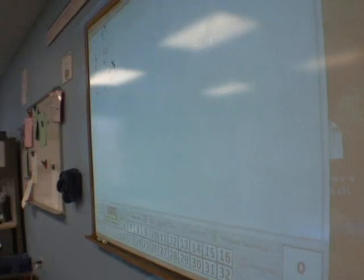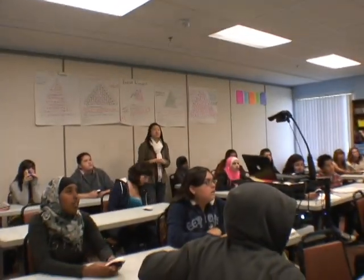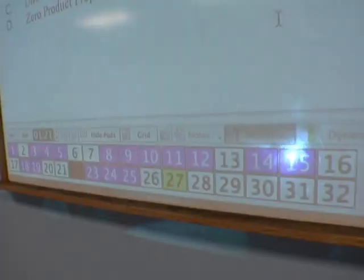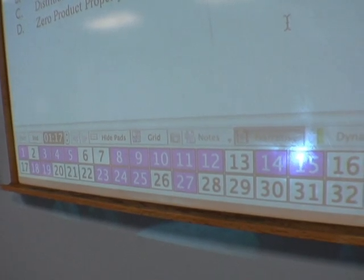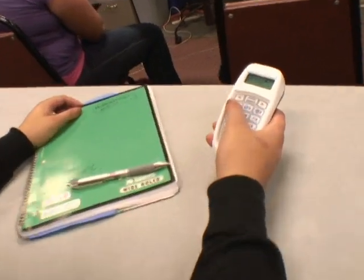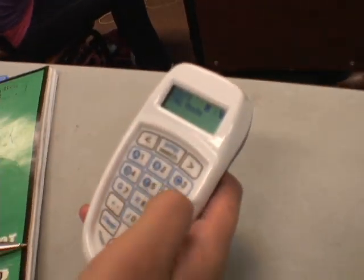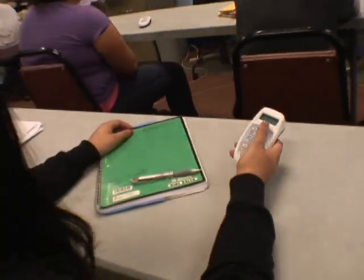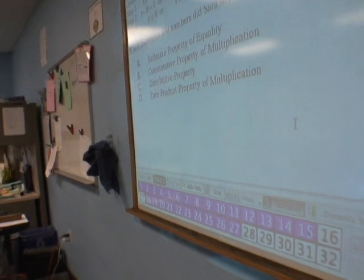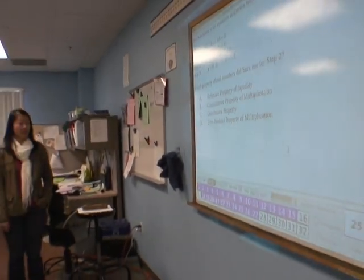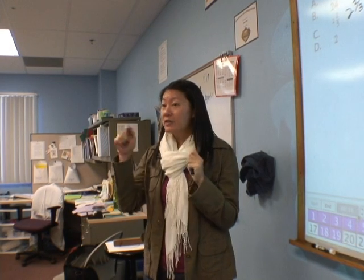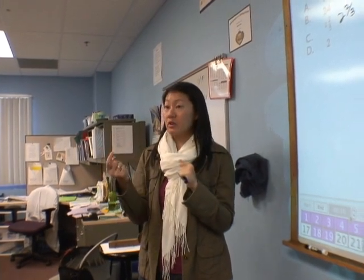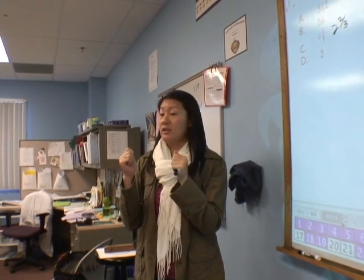It's 8 to the one-third power. Number 16 — get it in. Discuss which answer you got, convince the person next to you why your choice is better than theirs and see if it changes anything. Go.